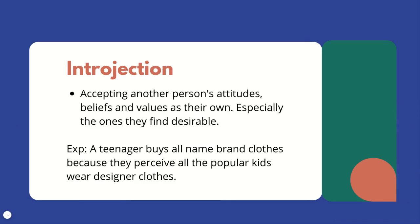Introjection: accepting another person's attitudes, beliefs, and values as their own, especially ones they find desirable. This is very common amongst adolescents who want to fit in. Example: a teenager buys all name-brand clothes because they perceive all the popular kids wear designer clothes. Another example is a child who is crying tries to stop and says, 'My family member said that I can't cry — it's weak.' They've heard these beliefs and are now taking them on as their own.